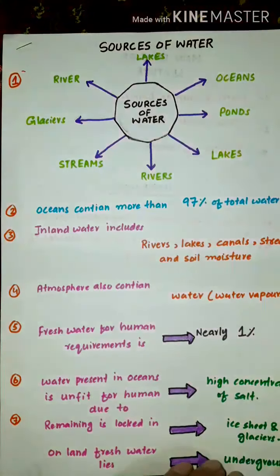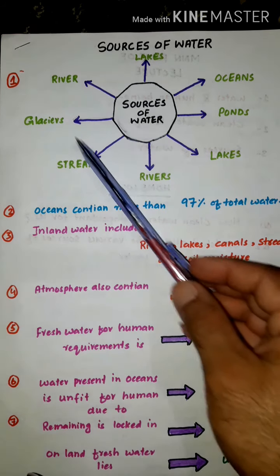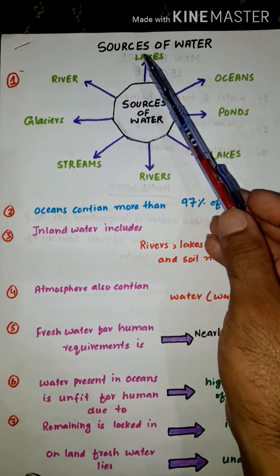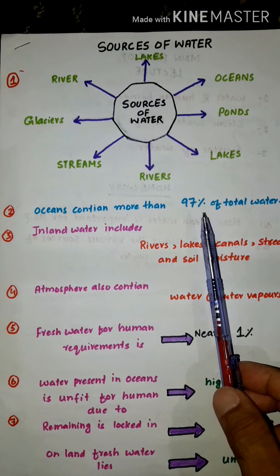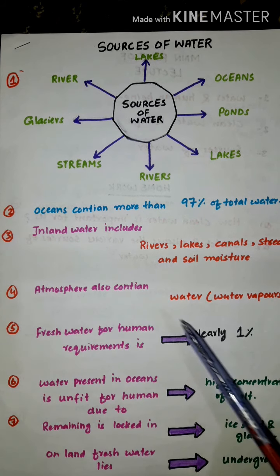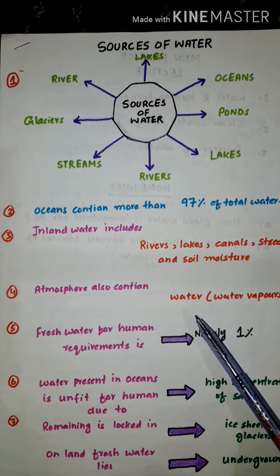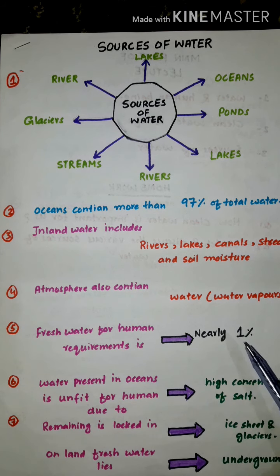We also discussed some of the sources of water, such as ocean, pond, lakes, river, stream, and glacier. Oceans contain more than 97 percent of total water. Inland water includes rivers, lakes, canals, streams, and soil moisture. The atmosphere also contains a considerable quantity of water in the form of water vapors. Fresh water required for humans is about nearly one percent.